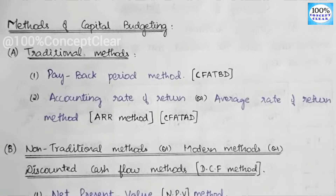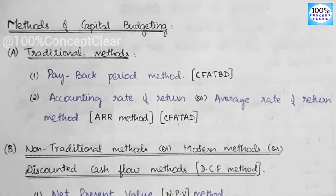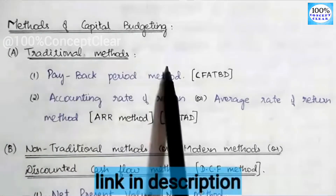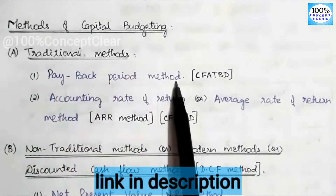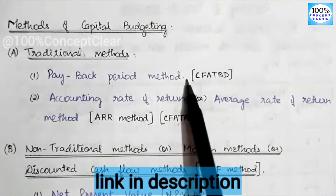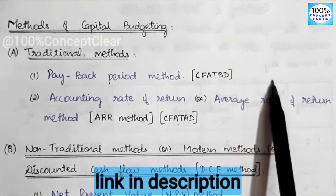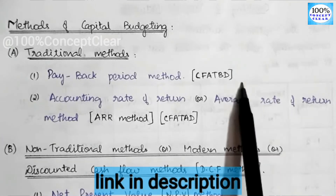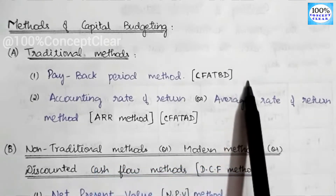Already in our channel, we are going to talk about the theory part: the meaning, objective, importance, classification, and methods. We are going to make a video about this. In the methods of capital budgeting, the first method is the traditional method. We are going to cover the payback period, and the playlist links will be in the description.